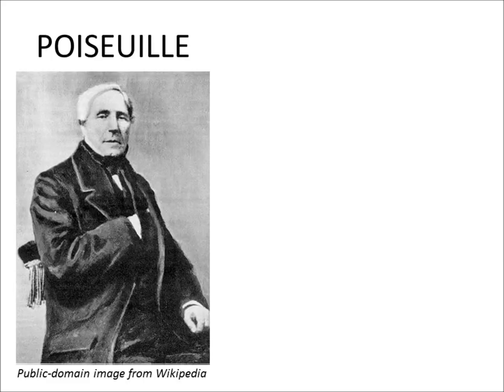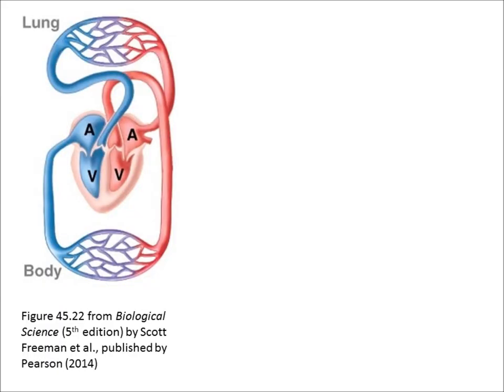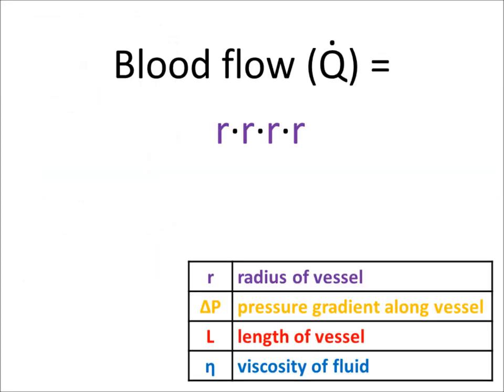When you want to think about flow for a vessel, there's a formula you employ. When the blood flows around and around, the flow rate through a given vessel can be found: R times R times R times R — that's R to the fourth times delta P, and that's all divided by 8 over pi, times the length of the vessel times viscosity.